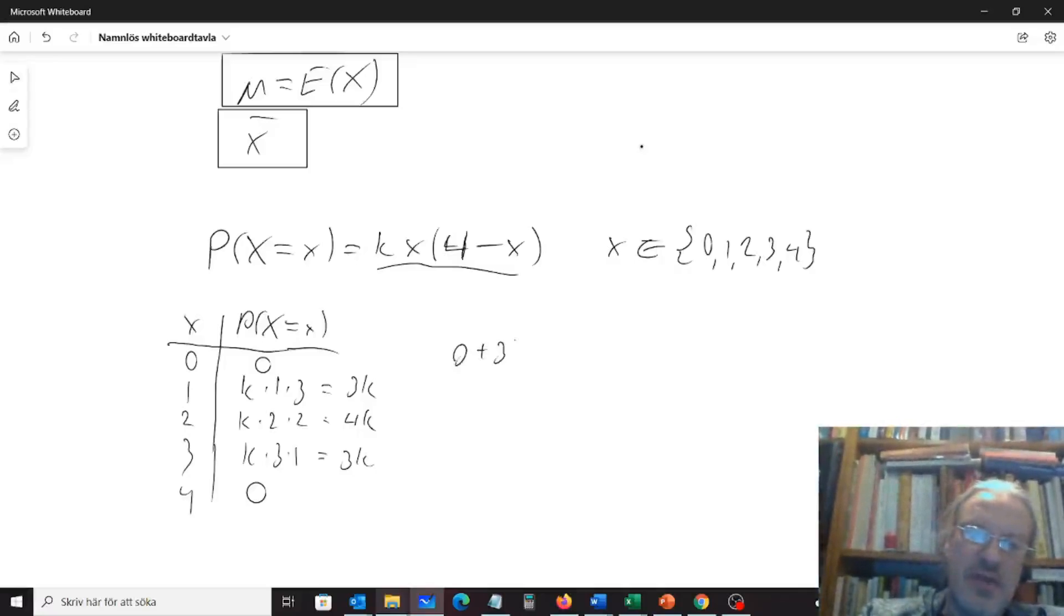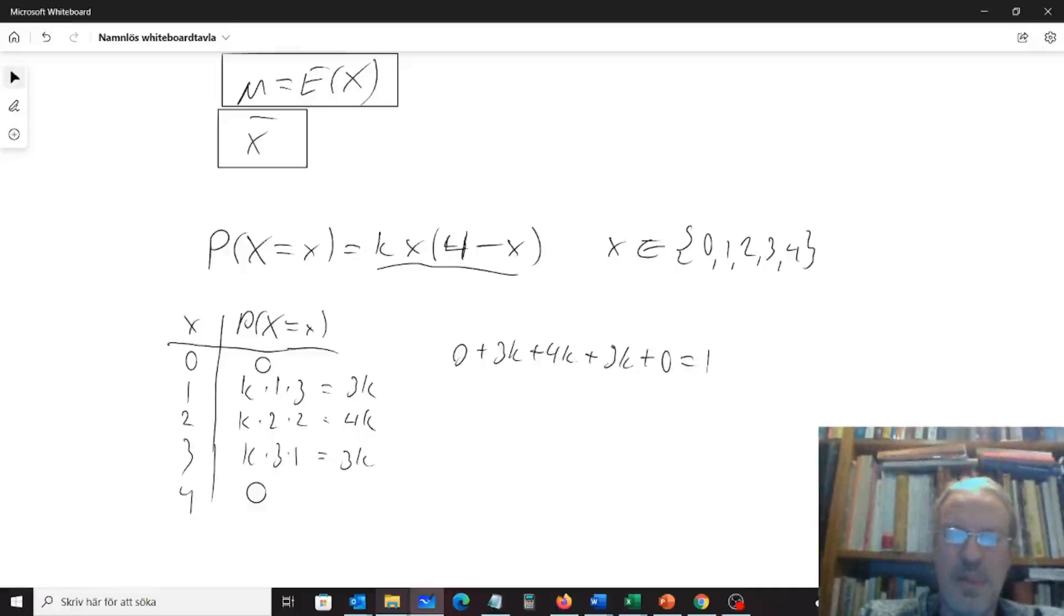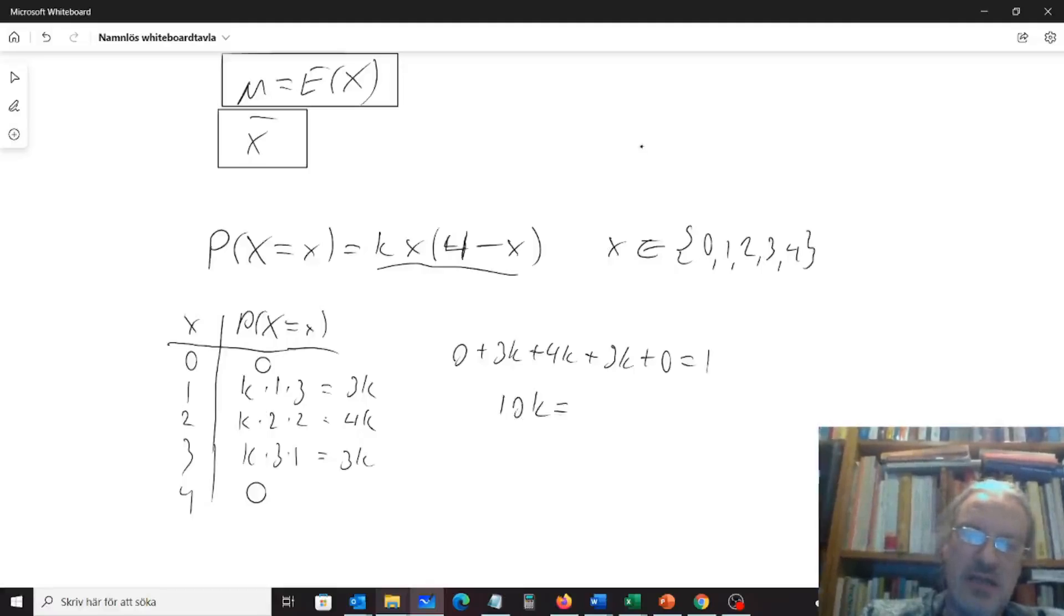So we can say, in other words, that 0 plus 3k plus 4k plus 3k plus 0 must be equal to 1. So we have 10k should be 1, so k would, in other words, be 1 tenth.